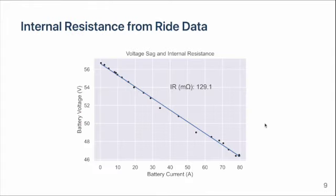Using the data logging invest tool, you can estimate the internal resistance of the battery. This data is from a full throttle run where the battery current increases as the vehicle goes from zero to maximum power. By plotting the battery voltage against the battery current, we see the voltage decreases or sags as the current increases.